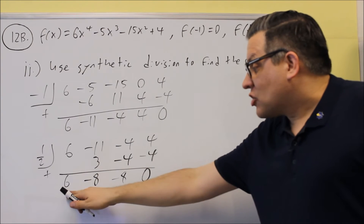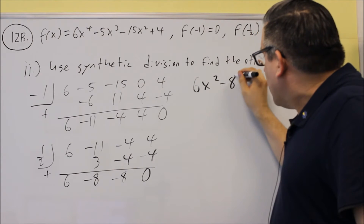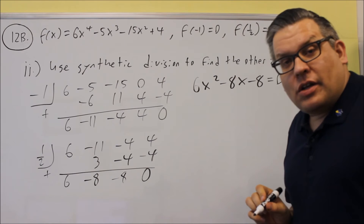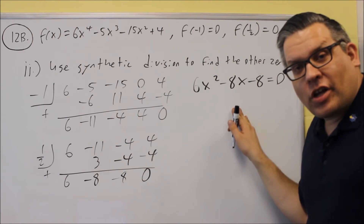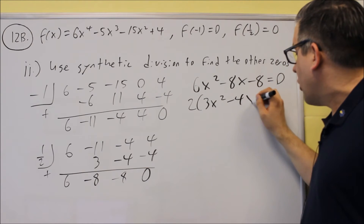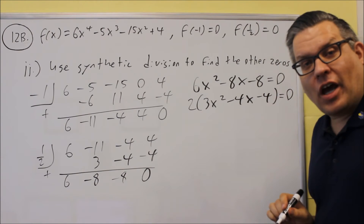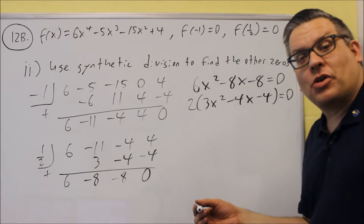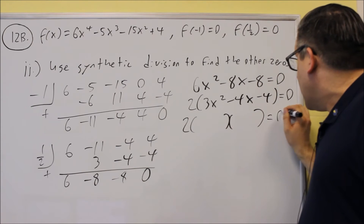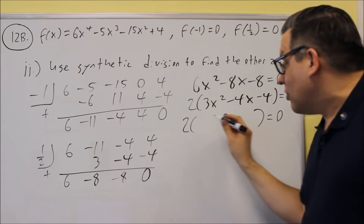Now there are three terms left — that's your x squared, x, and constant term. Write it out as an equation. Factor out a 2 from each term, leaving 3x squared minus 4x minus 4 equals zero. To factor this, I'll use trial and error. The only possibility for 3x squared is x and 3x. For the 4, I can use 1 and 4 or 2 and 2.